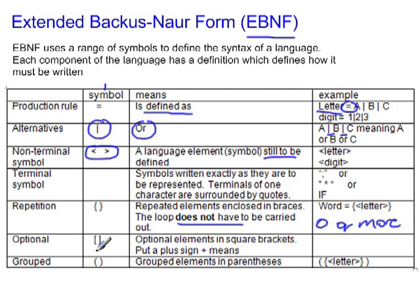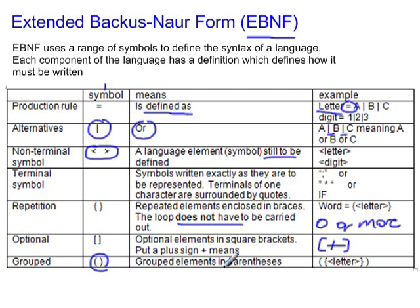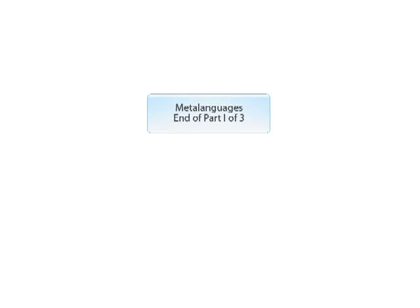Next we have optional, which uses square brackets. The optional means you're looking at having something or not — when you put something in square brackets, you can either have it or you don't have to have it. And the last one is round brackets, which are used for grouping elements together.